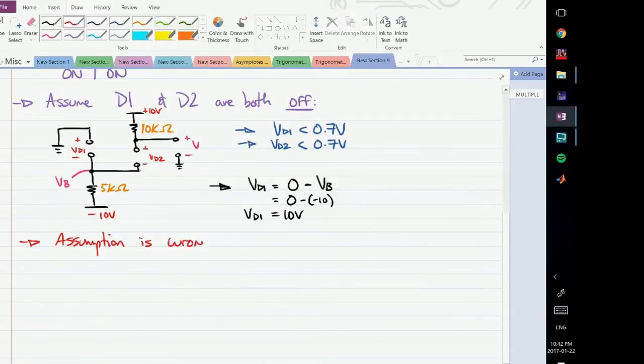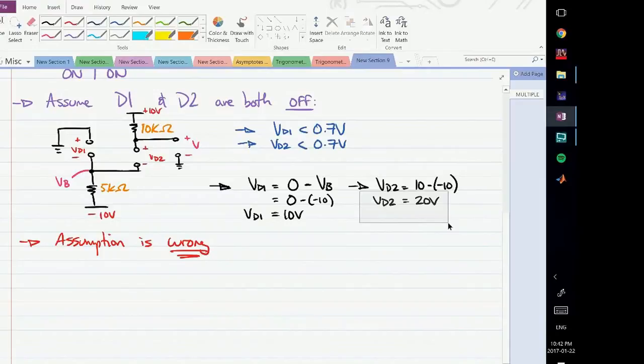Because we assumed the voltage across diode D1 would be less than 0.7, meaning it would be off. However, when we actually determined the voltage, we found VD1 equals 10 volts, which is definitely not less than 0.7 volts. We can do the exact same thing for VD2. Again, we have this open circuit, therefore this positive 10 volts will appear across the positive terminal of VD2, and minus 10 at the negative terminal. Therefore VD2 equals 10 minus negative 10, which is 20 volts. This is even greater than VD1, so this one is also not satisfying our conditions. This assumption is wrong.